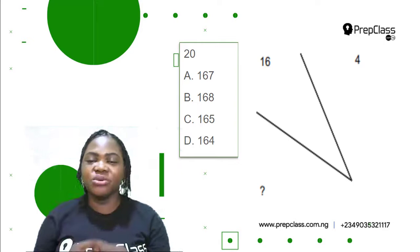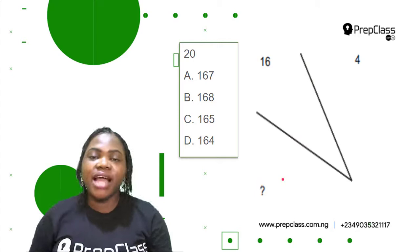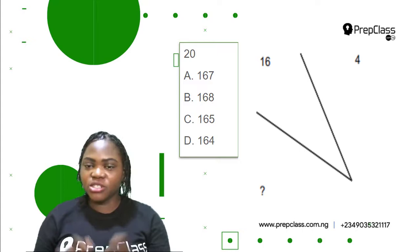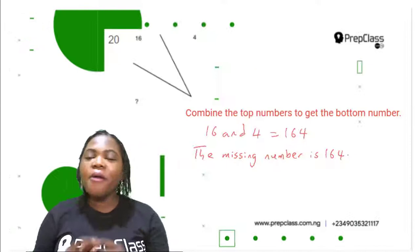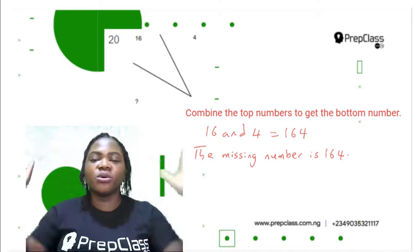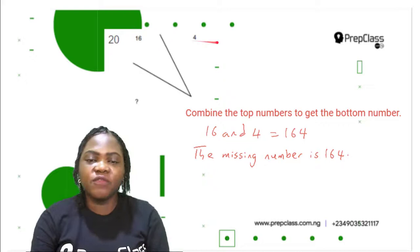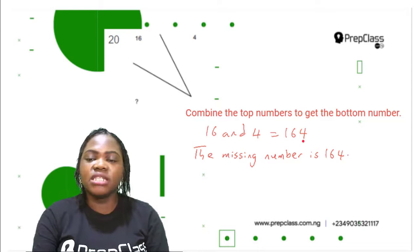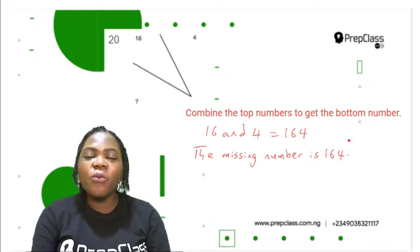Number 20, which is the last question in this video. We are given 16 and 4 as the top numbers, and the bottom number is missing. I would like you to pause this video and do it by yourself before you check your answers. Do it yourself and see if you get the correct answer. For the samples, to get the bottom number, simply combine the top numbers. The top numbers here are 16 and 4, and 16 and 4 combined gives 164.